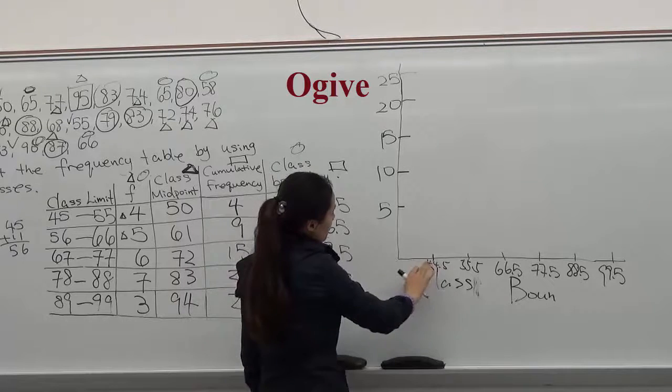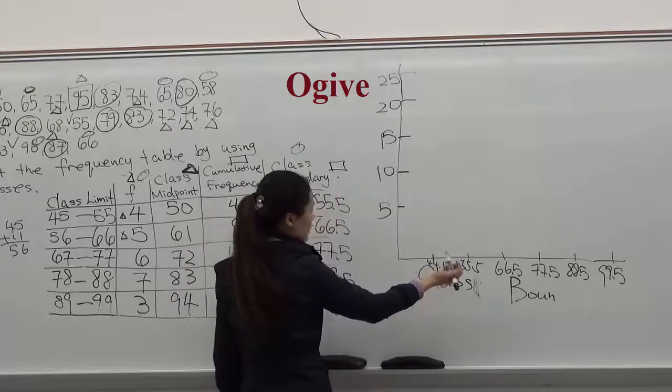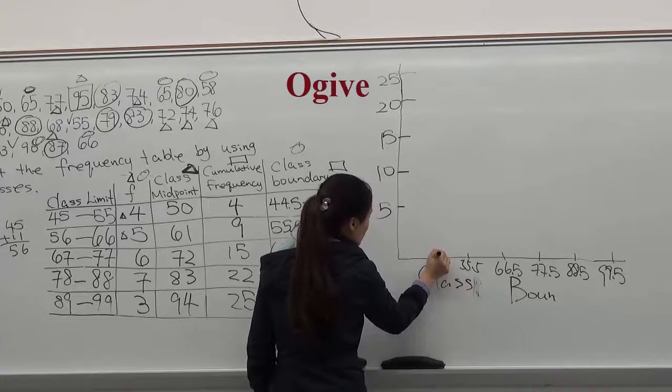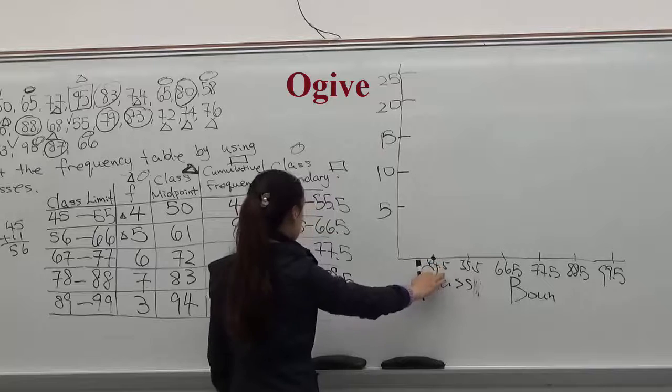The starting point is 44.5. That has the cumulative frequency of 0. So you have to dot this point, 44.5, 0.